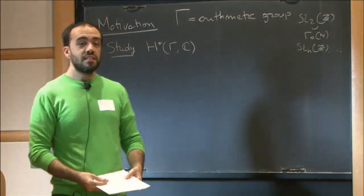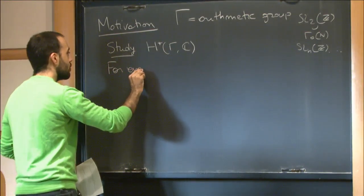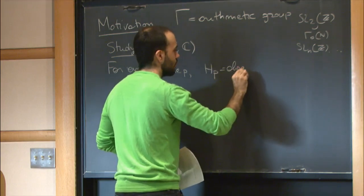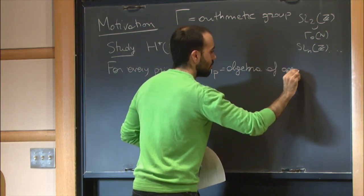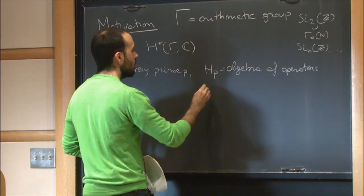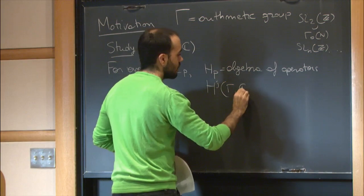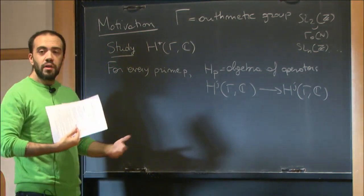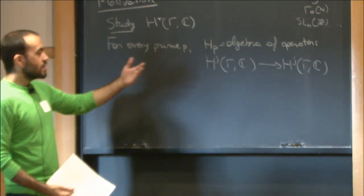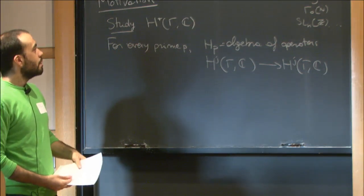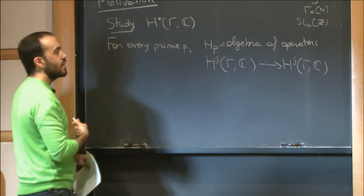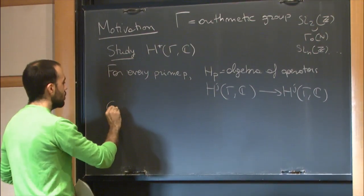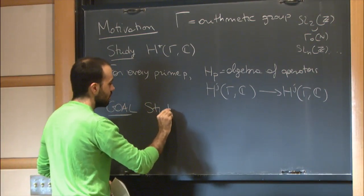This is a classical subject. In particular, for almost every prime P, we have an algebra of operators HP that acts on this cohomology algebra and preserves the cohomological degree. And this algebra, for almost all primes P, combines into a commutative algebra. We can study this cohomology as a module for this algebra. What we find out is that the same abstract module — the same abstract isomorphism class — happens in different cohomological degrees.